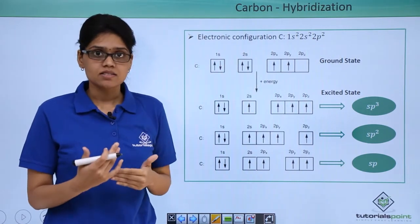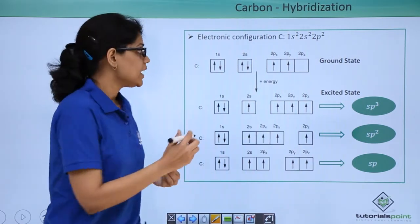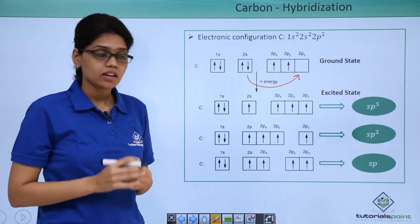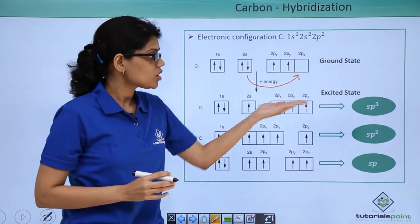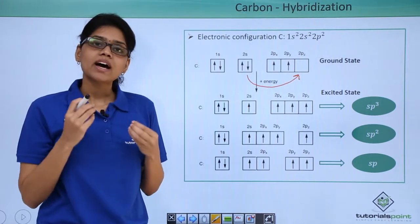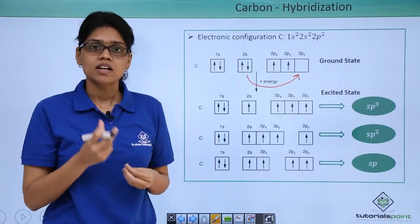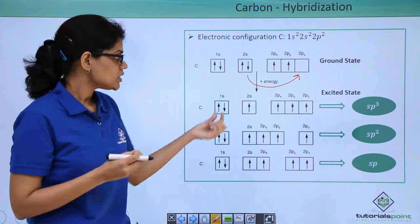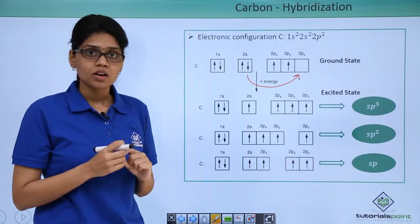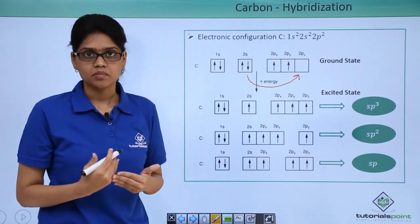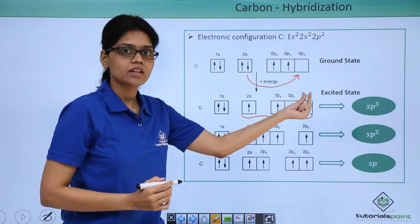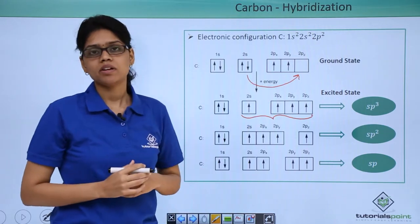Now if we excite carbon from the ground state — if we provide energy — this electron gets promoted to an empty orbital. You can see that the excited state electronic configuration looks something like this. Now, what do you actually mean by hybridization? The word hybrid essentially means mixing. Here there are multiple orbitals which are singly occupied, and if s mixes with all three orbitals — 2px, 2py, and 2pz — you essentially get sp3 hybrid orbitals.